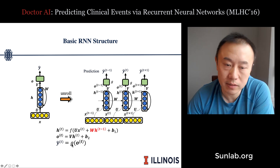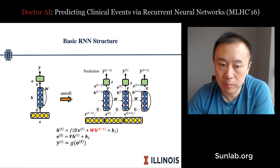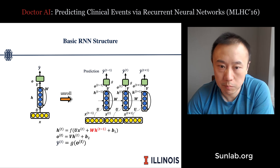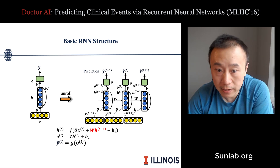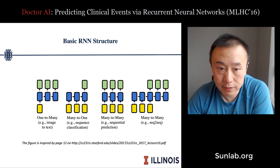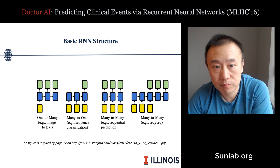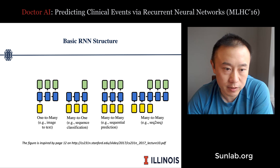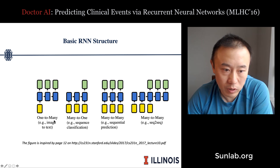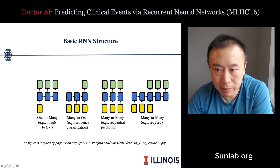There are many different RNN structures for different applications. You could have a one-to-many mapping: fixed-size input and variable output — for example, inputting an image and outputting a sequence of words describing the image.